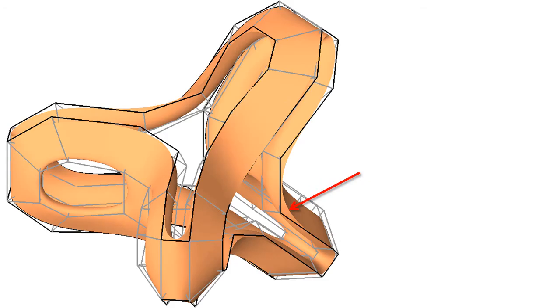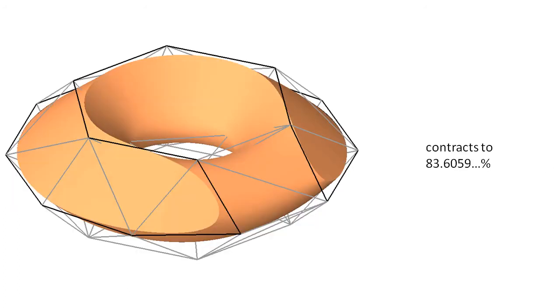The volume formula also applies to more sophisticated designs. In this example, we can show that the volume of the limit surface is about 83.6% of the volume of the initial control mesh. We can see that the surface normal is generally not continuous across the sharp crease.